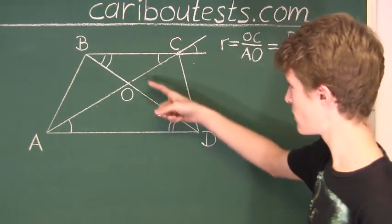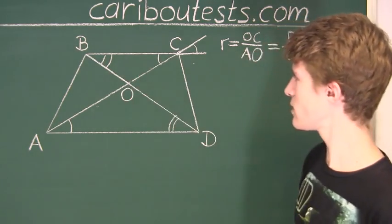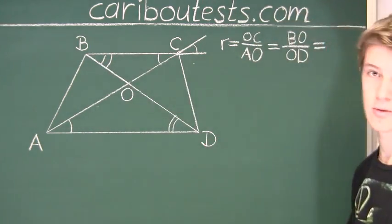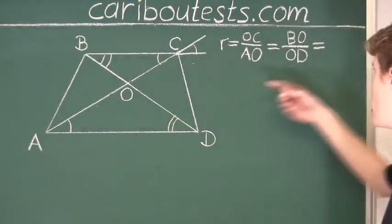And finally, we know that these two angles are equal, so the opposite sides are BC and AD, so we have BC over AD.